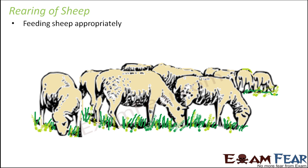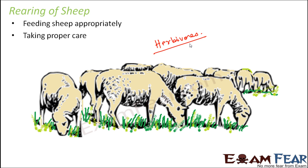Sheep are herbivores, so they mostly feed on grasses, leaves, and plants. However, they also feed on pulses, corn, grains, and dry fodder. It is also equally important to maintain proper hygiene, because if hygiene is not maintained, they might get infected with diseases, which would make them ill and also reduce the productivity of wool.